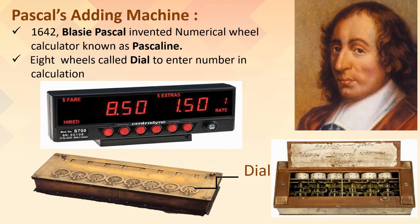Pascal's Adding Machine. Sir Blaise Pascal, a French mathematician, invented an adding machine called Pascal's Calculator or Pascaline at the age of 19 in the year 1642. It used gears, wheels and dials. Numbers were displayed by rotating the wheel. It was capable of performing addition and subtraction. The gears principle was further employed in many mechanical calculators. Nowadays, a taximeter is a perfect example of a mechanical calculator.